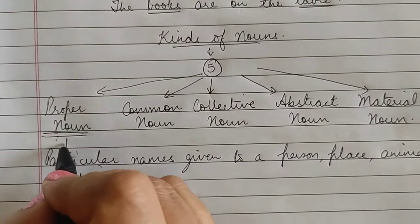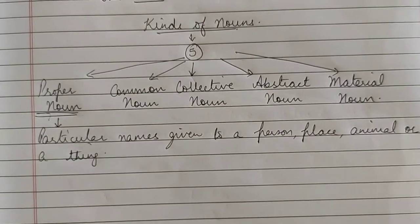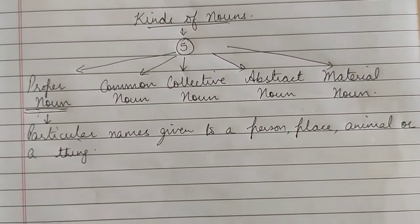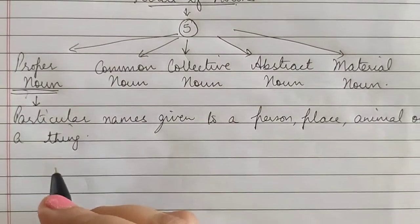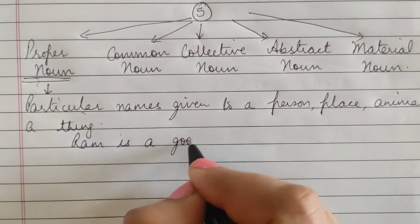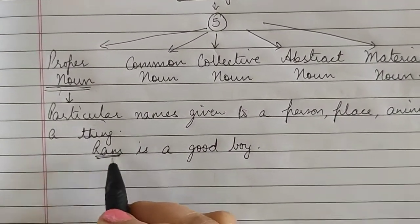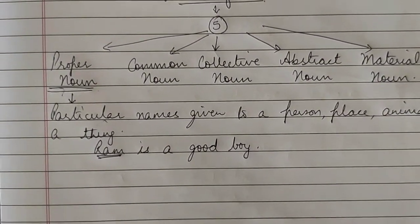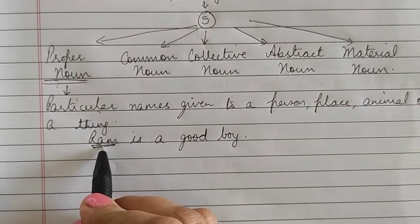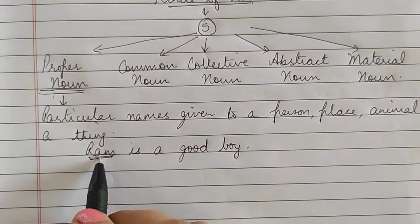Proper noun is a particular or specific name which is given to a person, place, animal or a thing. Like for example, Ram is a good boy. Here the name of the boy is Ram — a particular name is given to that boy. So Ram is the name of a person. It is a particular name given to that boy, so it is called a proper noun.